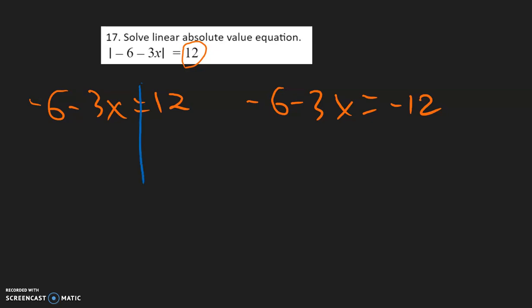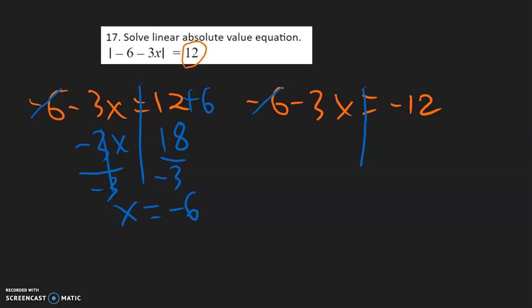So let's begin by solving. We want the variable to stay, but this negative 6 needs to be moved to the other side as positive 6. 12 plus 6 is 18. Bring down the negative 3x, and then we divide by negative 3, so we have x equal to negative 6. For the second equation, we bring the negative 6 over to the other side as positive 6. Negative 12 plus 6 is negative 6. Bring down the negative 3x, divide both sides by negative 3, so x is equal to positive 2.